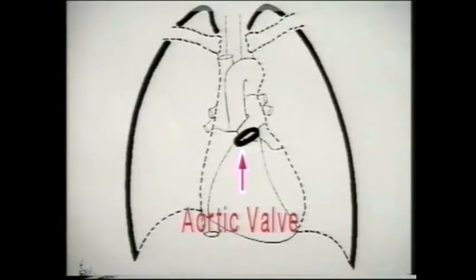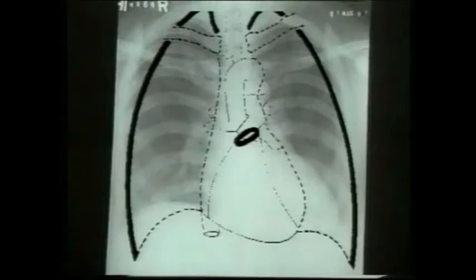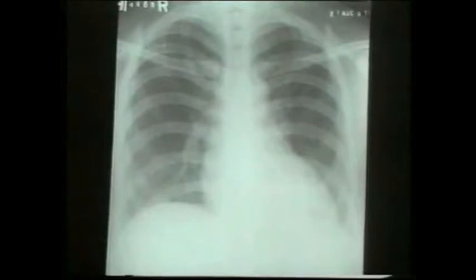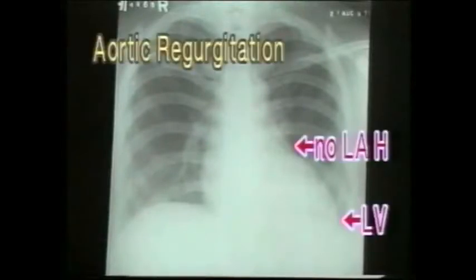Note the site of the aortic valve in the diagram. Aortic incompetence causes marked dilatation of the left ventricle with cardiomegaly in an outward and downward direction. Note the typical left ventricular enlargement in this case of aortic incompetence. In contrast to the mitral heart, this x-ray shows no left atrial prominence, and there is a pure left ventricular enlargement carrying the apex downwards and outwards.